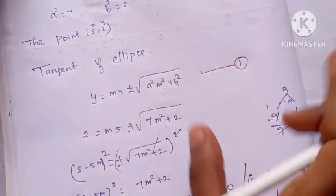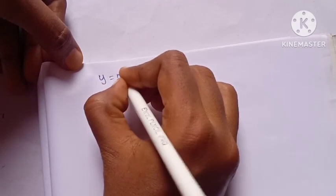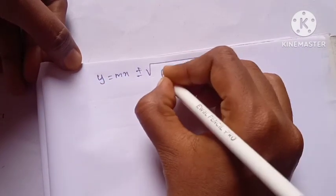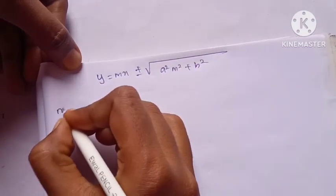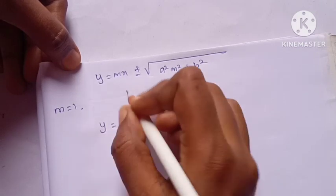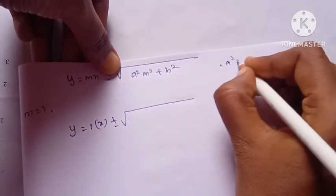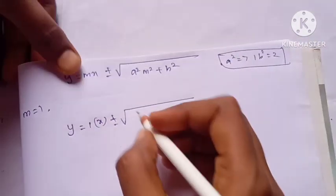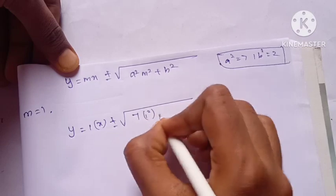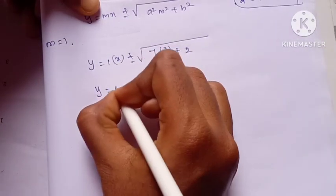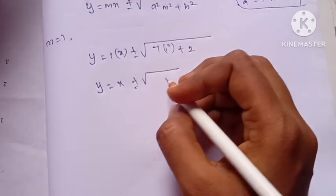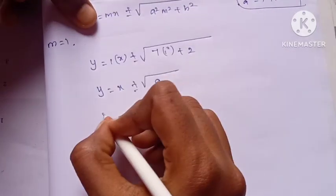For M equal to 1, the tangent is y equals x plus or minus the square root of a²m² plus b². Here a² is 7 and b² is 2, so we get 7 times 1² plus 2, which is 9. The square root of 9 is 3, so y equals x plus or minus 3.